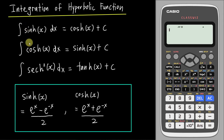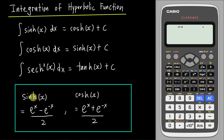First, we can see there are three basic rules of integration for hyperbolic sine, hyperbolic cosine, and hyperbolic secant squared. This is the result you will get, and this is the basic rule for hyperbolic sine and hyperbolic cosine. If you want to get hyperbolic tangent, you can just use hyperbolic sine divided by hyperbolic cosine.